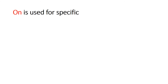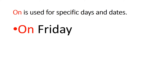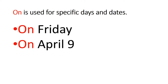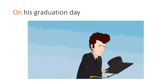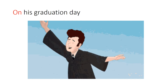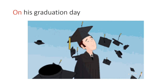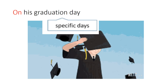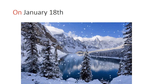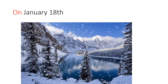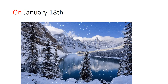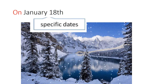On is used for specific days and dates. जब मखसूस दिन और मखसूस date का इस्तमाल करते हैं तो on इस्तमाल करते हैं। जैसे on Friday — खास दिन है जुमे का। On April 9 — हमने महीने का एक खास दिन चुन लिया। On his graduation day — जब आपको degree मिलती है तो उसको graduation day कहते हैं। इंशाअल्लाह एक दिन आपको भी degree मिलेगी।